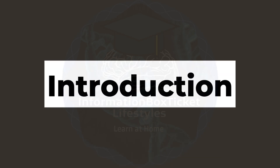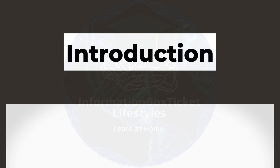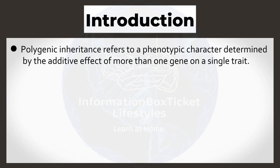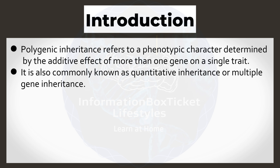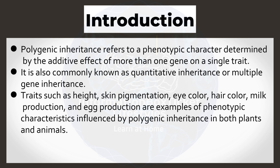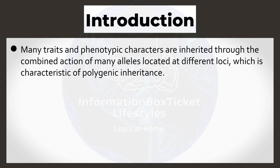Introduction to Polygenic Inheritance. Polygenic inheritance refers to a phenotypic character determined by the additive effect of more than one gene on a single trait. It is also commonly known as quantitative inheritance or multiple gene inheritance. Traits such as height, skin pigmentation, eye color, hair color, milk production, and egg production are examples of phenotypic characteristics influenced by polygenic inheritance in both plants and animals. Many traits and phenotypic characters are inherited through the combined action of many alleles located at different loci.